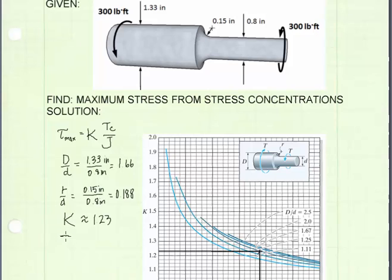We will also need a value for T, which is equal to 300 foot-pounds or pound-feet. You can go either way. And C will be, for this problem, the radius of the smaller diameter, which is going to be 0.4 inches.